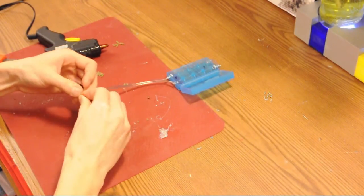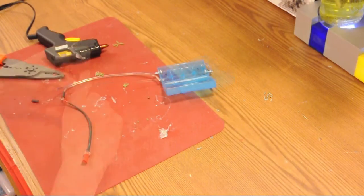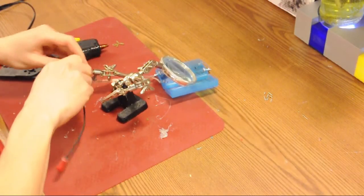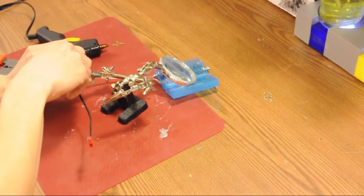So we're going to twist the black wires together. If you have this, it's called a third hand, it can be very useful.